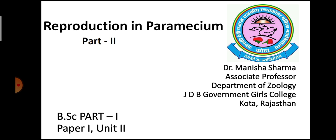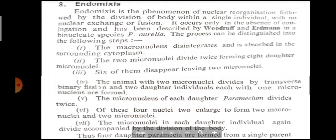आज हम आपके Paper First की Unit Second की Topic, Reproduction in Paramecium का Second Part पढ़ेंगे. पहले Part में हमने Asexual Reproduction in Paramecium by Means of Binary Fission और Sexual Reproduction by Conjugation पढ़ा था. अब इसके आगे आज हम पढ़ेंगे Endomixis.